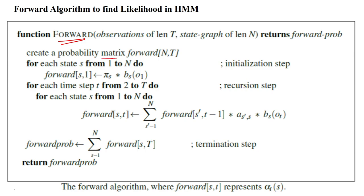We will make the probability matrix: forward of n, t — where t is the length of observations and n is the length of the state graph. From each state, we have to move from the first state to n number of states. Here, our number of states are three, but all three states are hidden states. So we have to move from one to three states, one by one.